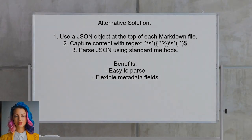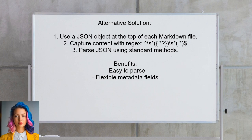One alternative approach for embedding metadata in Markdown files is to use a simple JSON object at the top of each file. This method may require a bit more typing, but it is easy to parse. The user captures the JSON and Markdown content using a regular expression, allowing for flexible metadata fields.